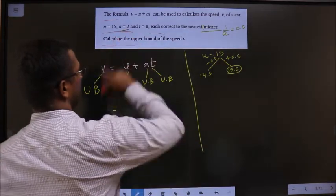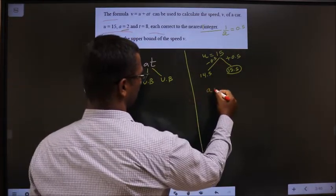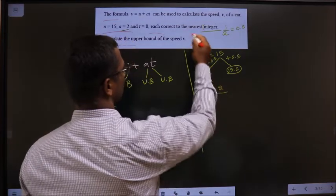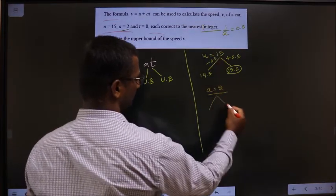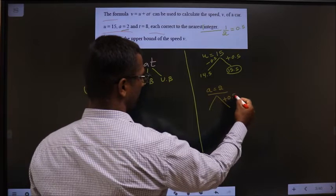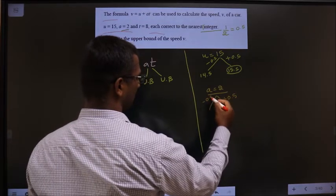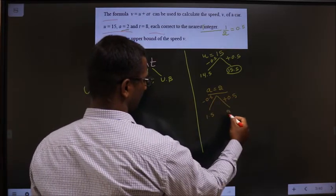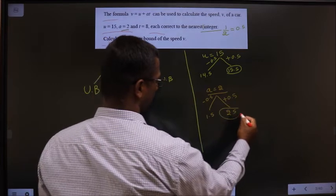Next, when A equal to 2. Even this is also to the nearest integer. So add 0.5, subtract 0.5. This is the upper bound.